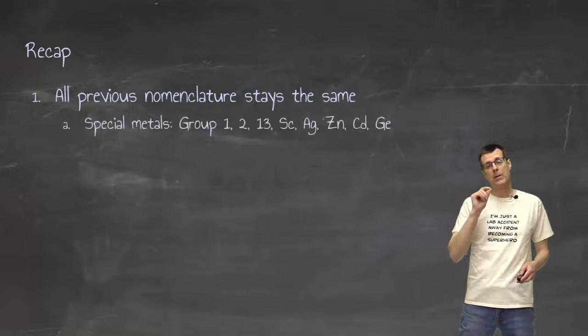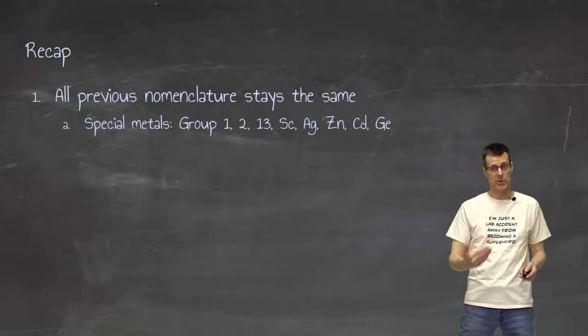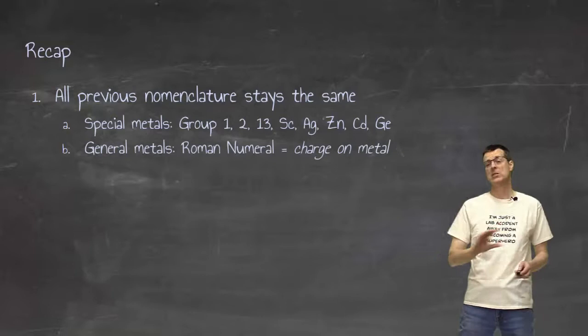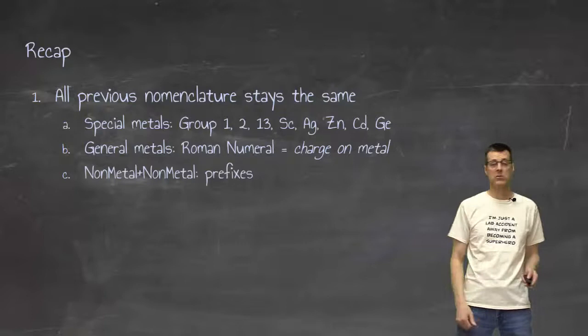And I want to highlight this point because I've been making this comment quite a few times, is that those special metals that don't take a Roman numeral will never take a Roman numeral. And the Roman numeral is going to be the charge on the metal. It's not a counting tool. It's nothing other than the charge on the metal. And then the prefixes, making sure that we have those and we're not getting those mixed up.